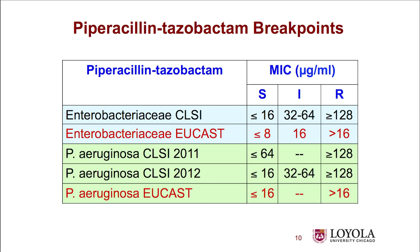Here's an example of the PIP-TAZO breakpoints between CLSI and EUCAST. For Enterobacteriaceae, CLSI says any MIC less than 16 is susceptible, but EUCAST calls 16 intermediate — it has to be less than 8. The MIC is the same; they use the same Vitek, Microscan, and Phoenix in Europe that we use here. They get the same MIC, but it's reported with a different breakpoint. For Pseudomonas aeruginosa, CLSI lowered the susceptible breakpoint from 64 to 16 in 2012 to harmonize with EUCAST, but their resistance breakpoints still differ: above 16 in Europe versus above 128 in the US.